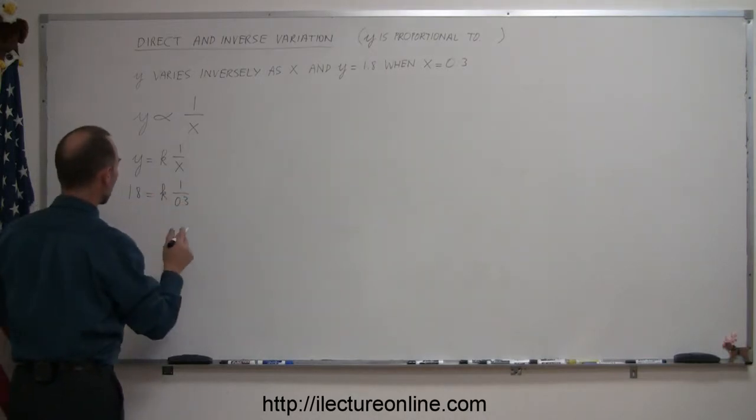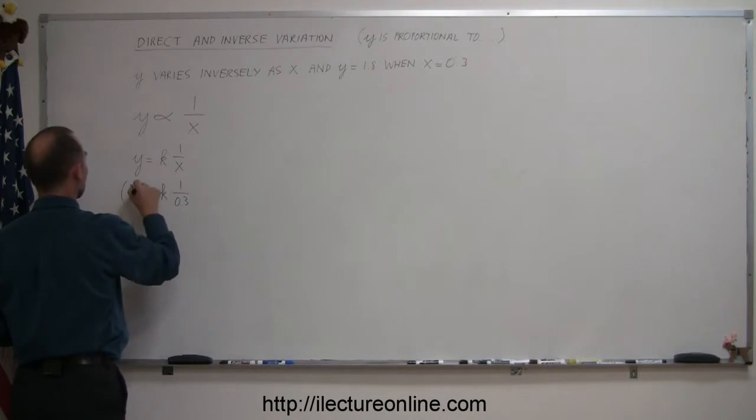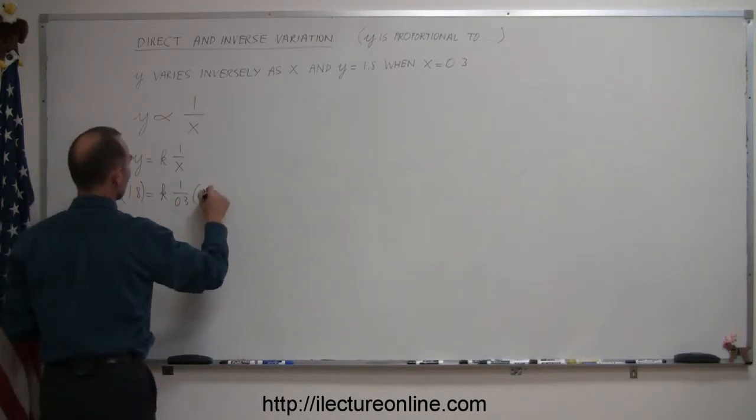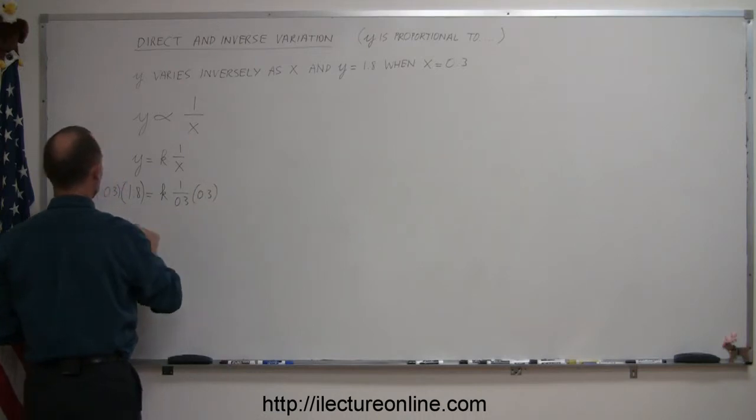Now we want to multiply both sides by 0.3 to isolate k. So this cancels out and we have k is equal to 0.3 times this. That would be 0.3 times 1.8, which equals 0.54.